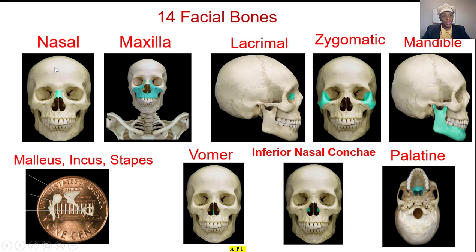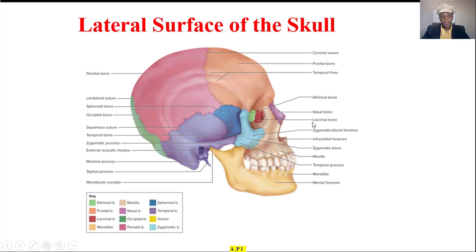Let's look at them together: nasal, maxilla, lacrimal, zygomatic, mandible. The three auditory ossicles: malleus, incus, stapes. Then the vomer, the inferior nasal concha, palatine. This is the lateral view of the skull.